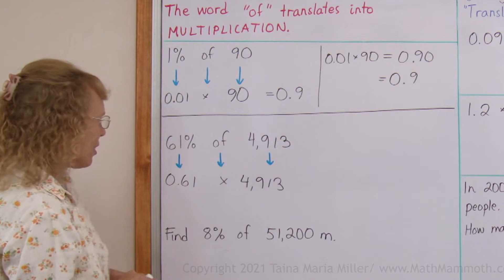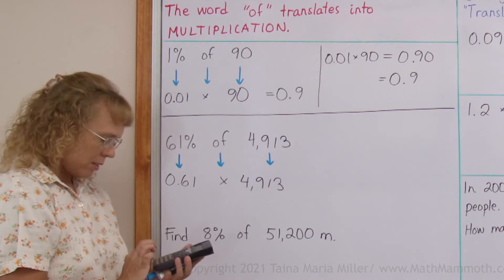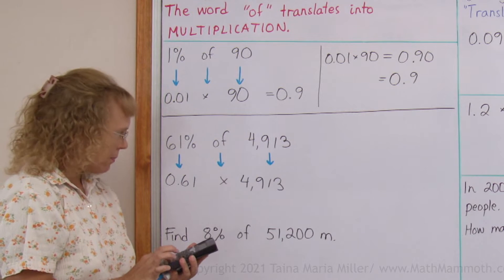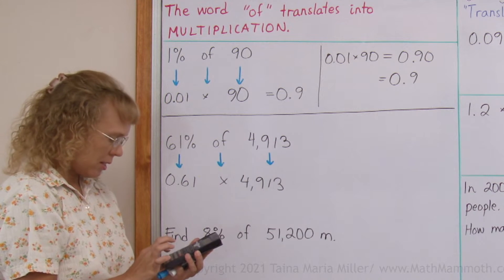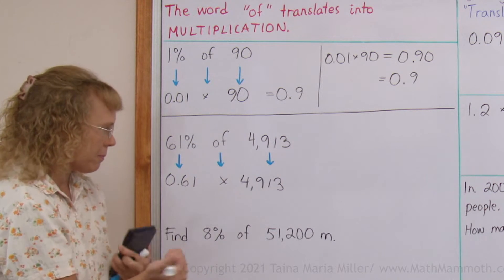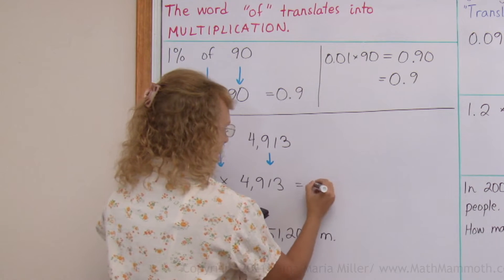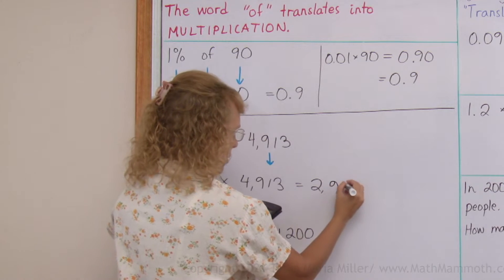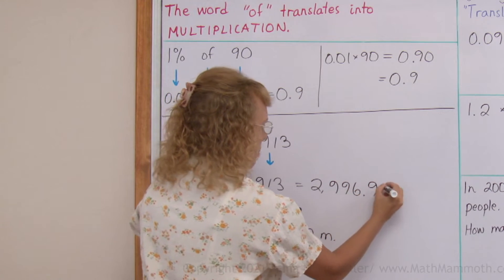And now the calculator. 0.61 times 4913. And we get 2,996.93.